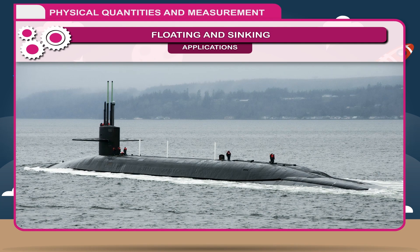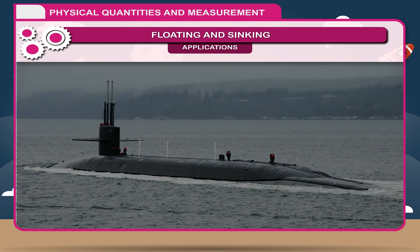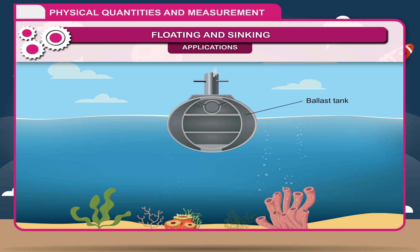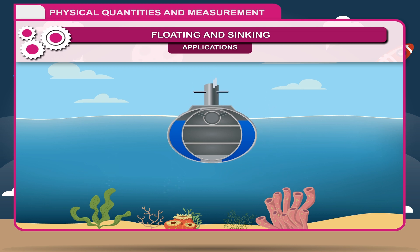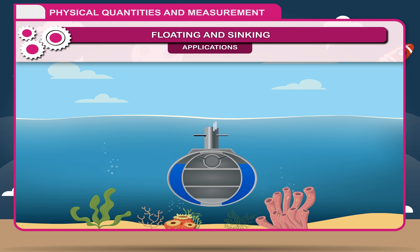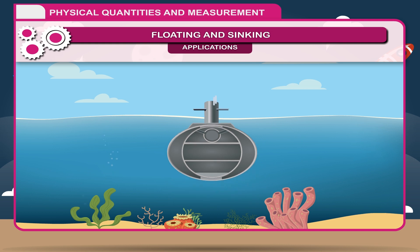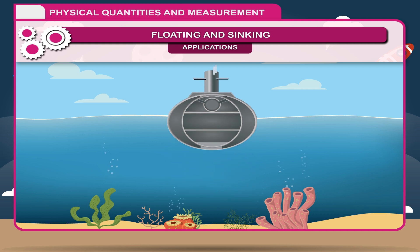A submarine is provided with a ballast tank. When its ballast tank is filled with water, its average density becomes more than seawater, so it dives into the water. When the water is forced out from its ballast tank, its average density becomes less than that of water, so the submarine rises to the surface.